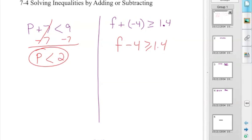And we have F minus 4 is greater than or equal to 1.4. To get the F all alone, we add 4 to both sides of the inequality sign. Because you're such advanced math students, what happens to the fours? They cancel each other out. And you get F is greater than or equal to 5.4.